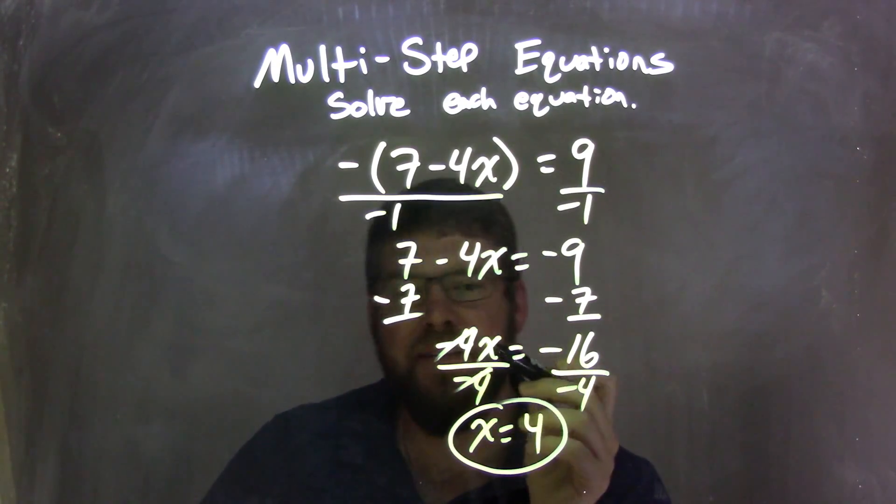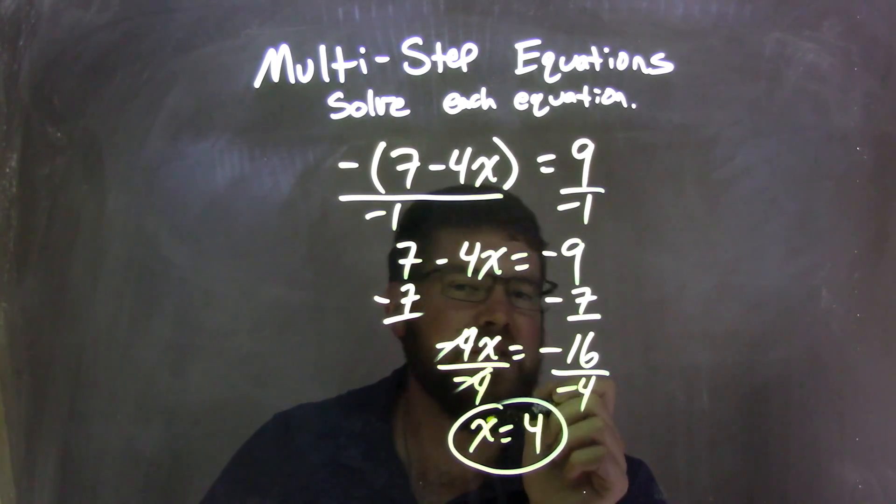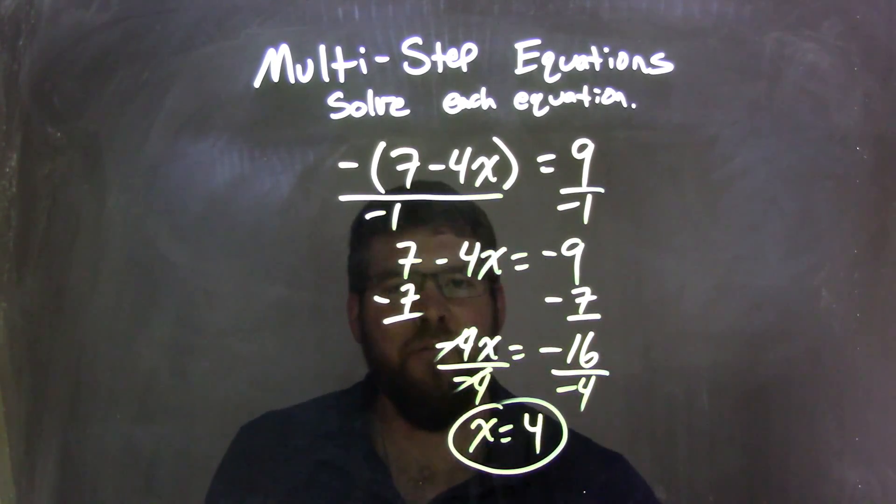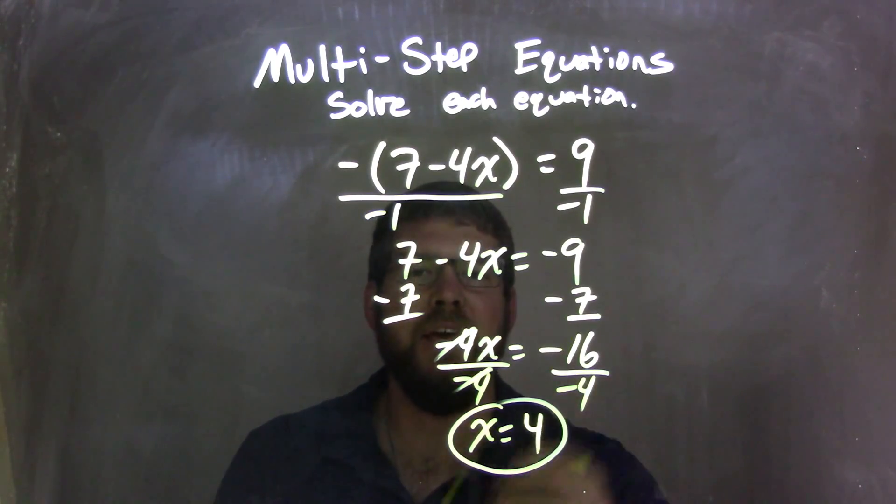Divided both sides by negative 4, because that's the opposite of the multiplication, leaving me with just x on the left. Negative 16 divided by negative 4, a negative divided by a negative is a positive, so negative 16 divided by negative 4 is 4, giving me my final answer of x equals 4.